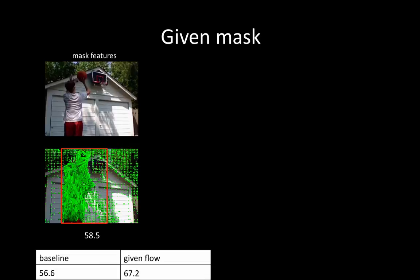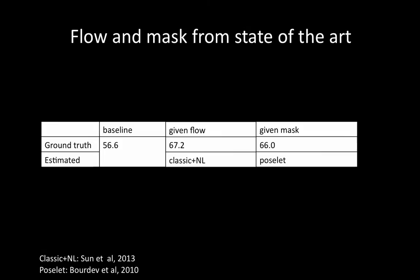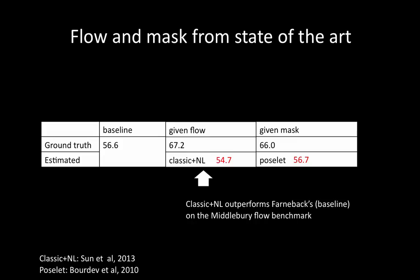Next, we consider the puppet mask. We compute the features on the whole frame, then take only those from the human's bounding box. We also mask the image with a bounding box before computing features, then mask the image with a puppet mask. Finally, we resize the masked images such that the person has unit scale. The last option leads to the largest performance gain over the baseline. We then ask whether flow and masks from state-of-the-art algorithms can help with action recognition. We run Bordev's poselet detector and Sun's classic NL flow algorithm. The resulting performance is about the same or even worse than the baseline, suggesting that better flow on standard benchmarks doesn't mean better flow for action recognition.